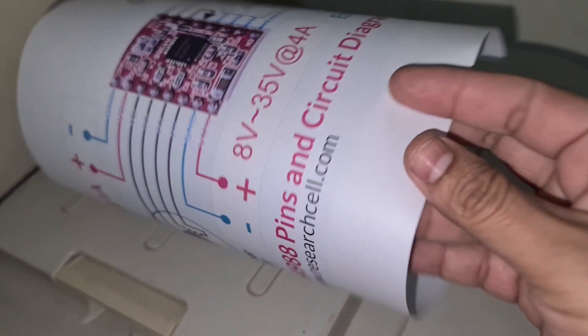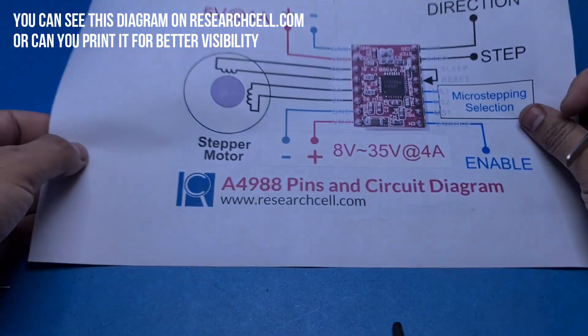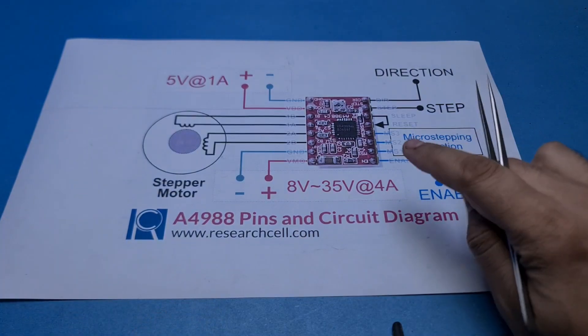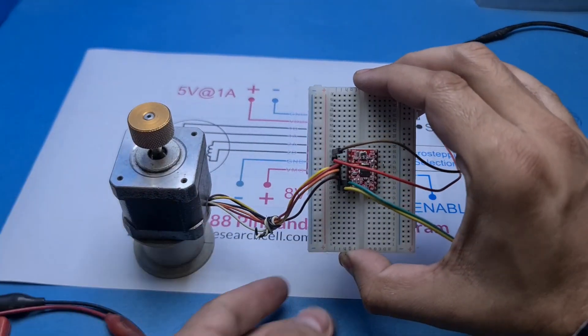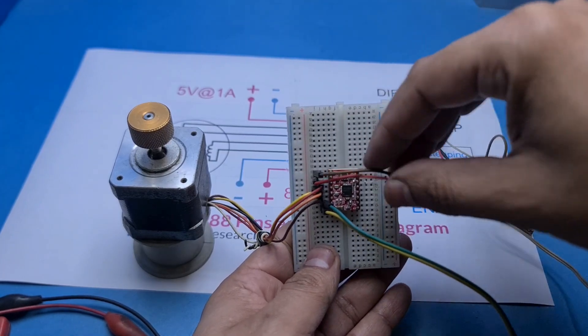To make this video easier to understand, I am also printing the basic usage diagram of the A4988 driver, which you can download from researchcell.com. I will also share a link in the video description. To save your time, I have skipped the wiring part, but I will show you how I connected the wires.